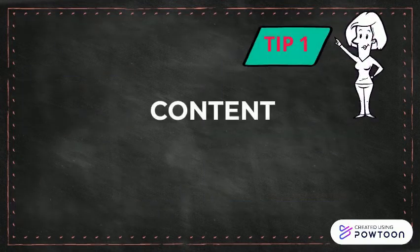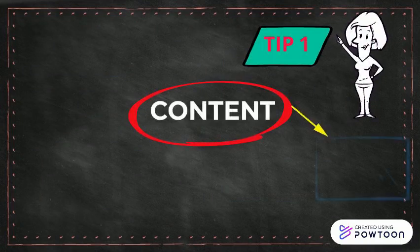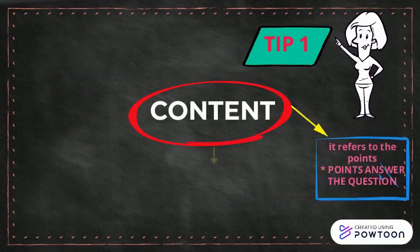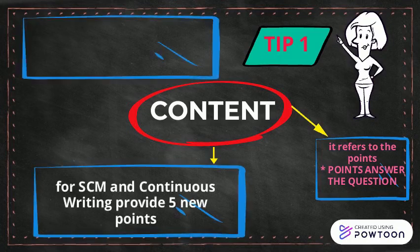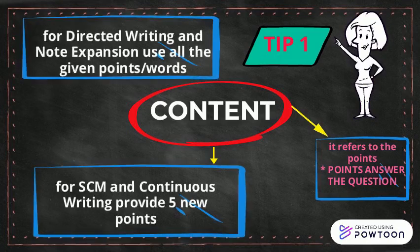As you can see on the blackboard, Tip 1 refers to content. Content refers to the points that you're writing. For directed writing and note expansion, use all the given points or words. For short communicative message and continuous writing, provide 5 new points.